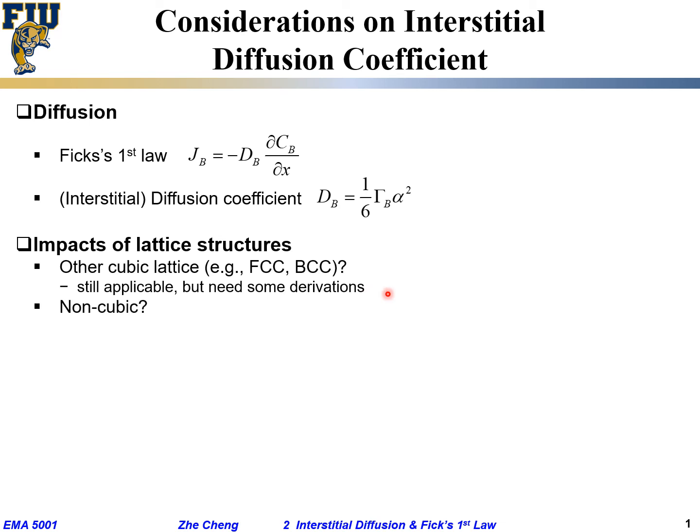What if the material is not cubic? Non-cubic, HCP, rhombohedral, whatever. For those cases, does this apply? Not exactly, because it's not centrically symmetric. You can imagine the diffusion coefficient would be different along different crystal structure directions.